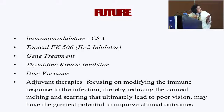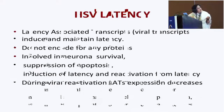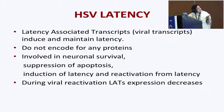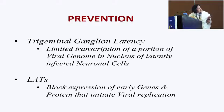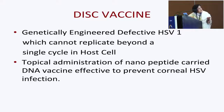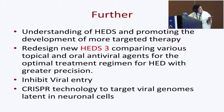The future lies in the use of immunomodulators, topical IL-2 inhibitors, gene treatment — lots have come in gene treatment now — and disc vaccines to prevent recurrence. HSV latency is a big bugbear, so a lot of research is now going on about how to deal with the latent virus in the neuron. LATs research is ongoing to inhibit viral replication in the neuronal area. Disc vaccines are being seriously considered, and CRISPR technology is being explored to target viral genomes latent in neuronal cells. Thank you very much — I'm not sure whether I made it more complicated or demystified it.